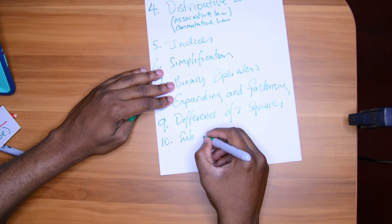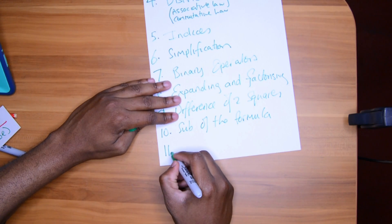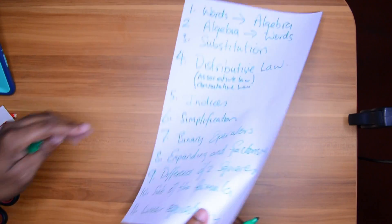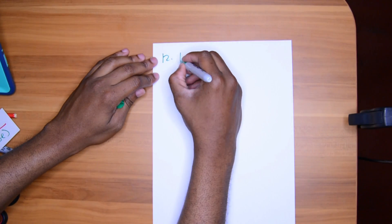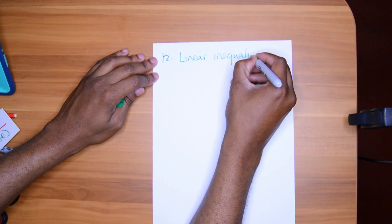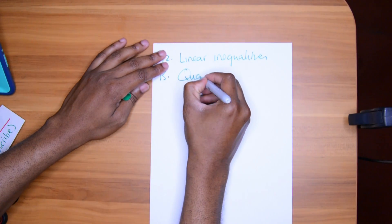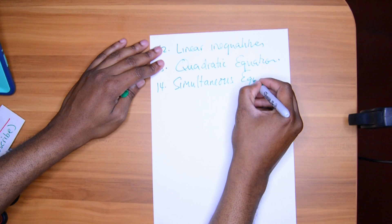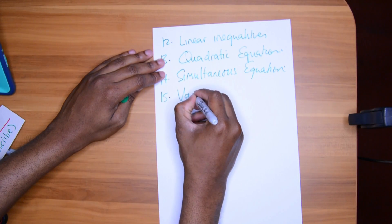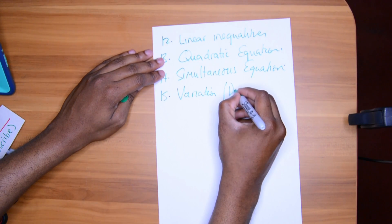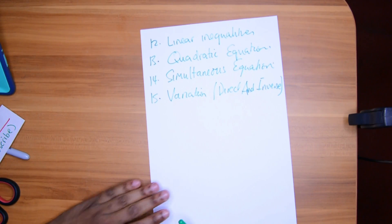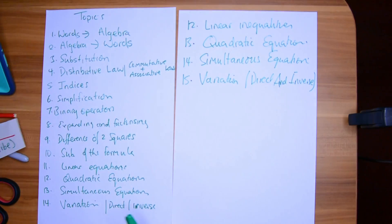Continuing: eight — expanding and factorizing; nine — difference of two squares; ten — finding the subject of the formula; eleven — linear equations; twelve — linear inequalities; thirteen — factorizing quadratic equations; fourteen — simultaneous equations; fifteen — variation, both direct and inverse proportionality. That's how many topics algebra has.